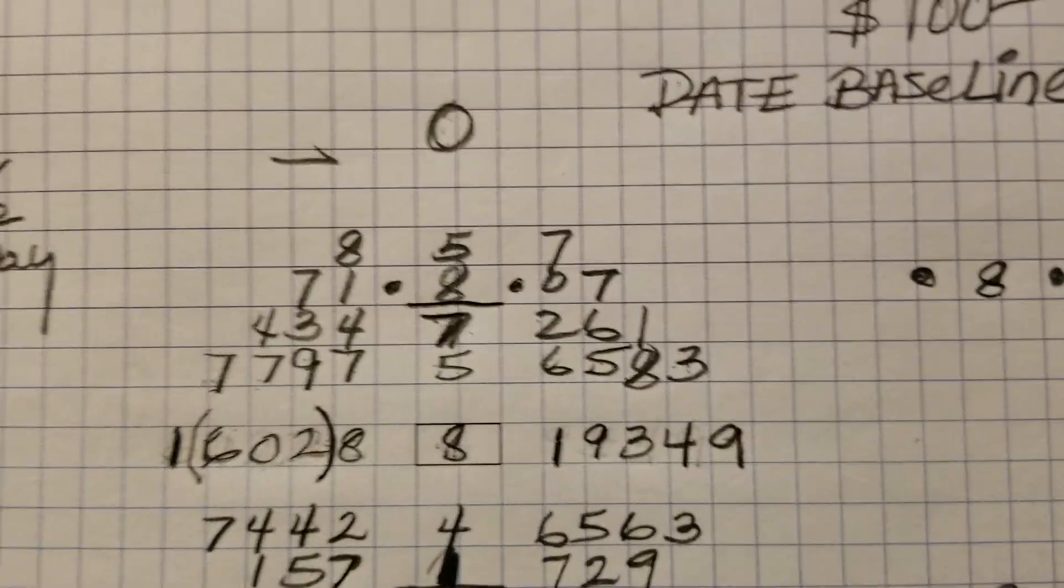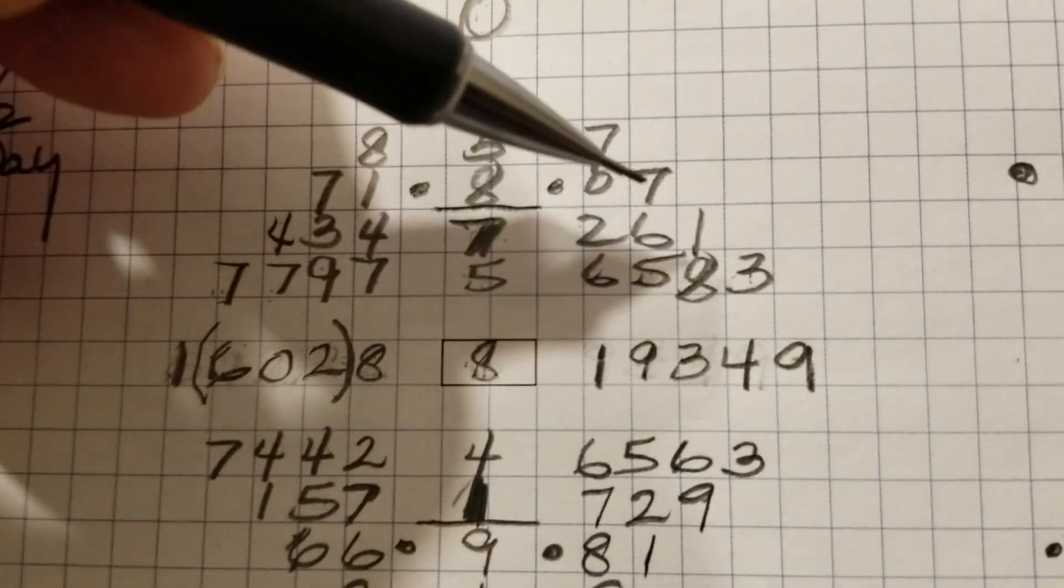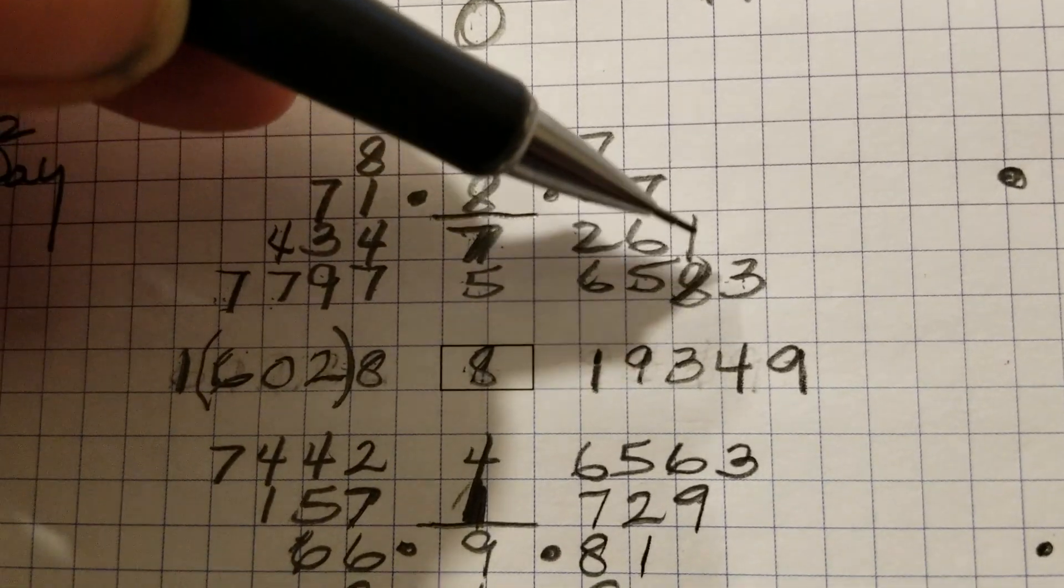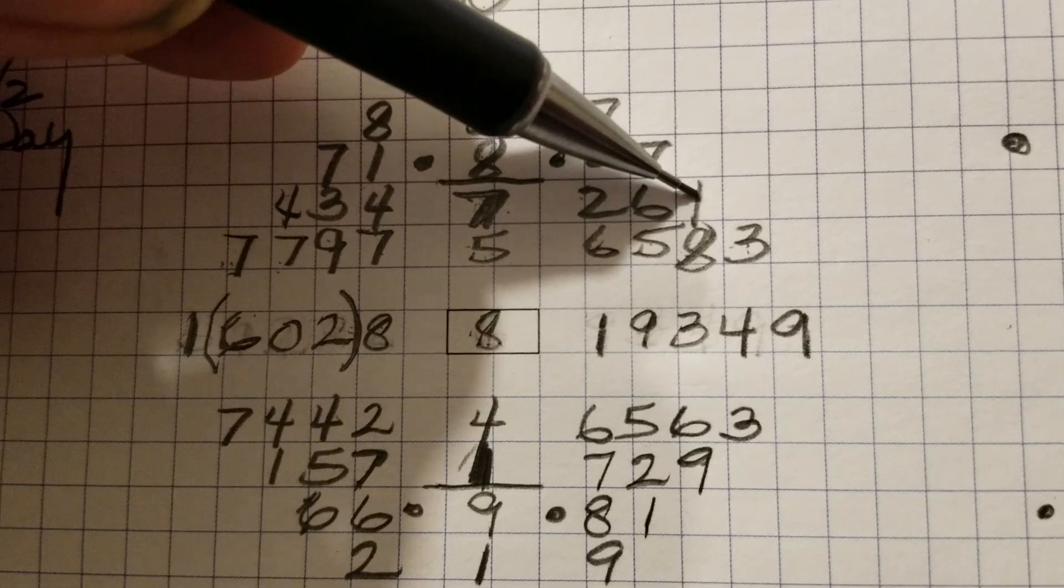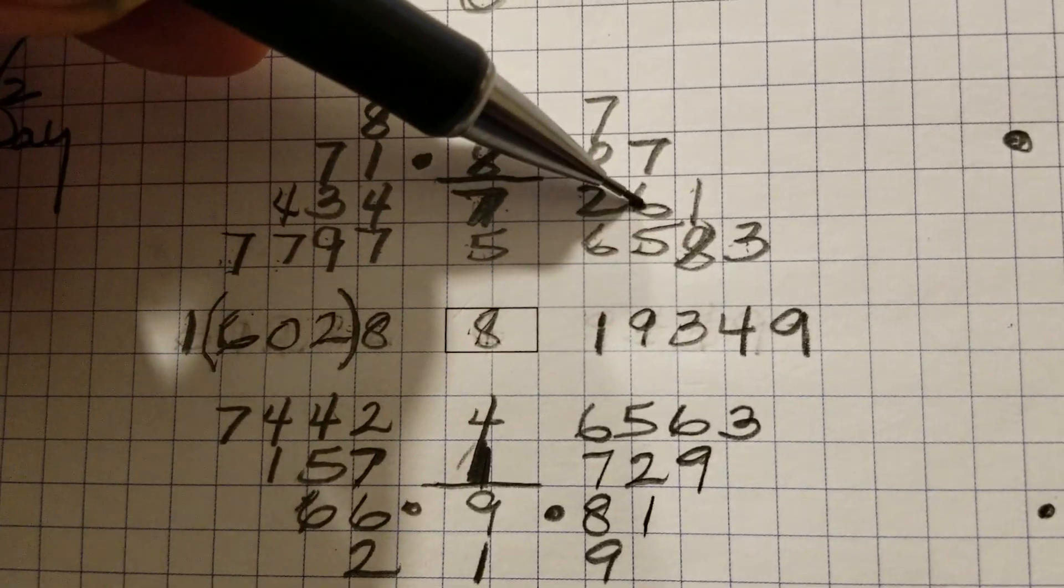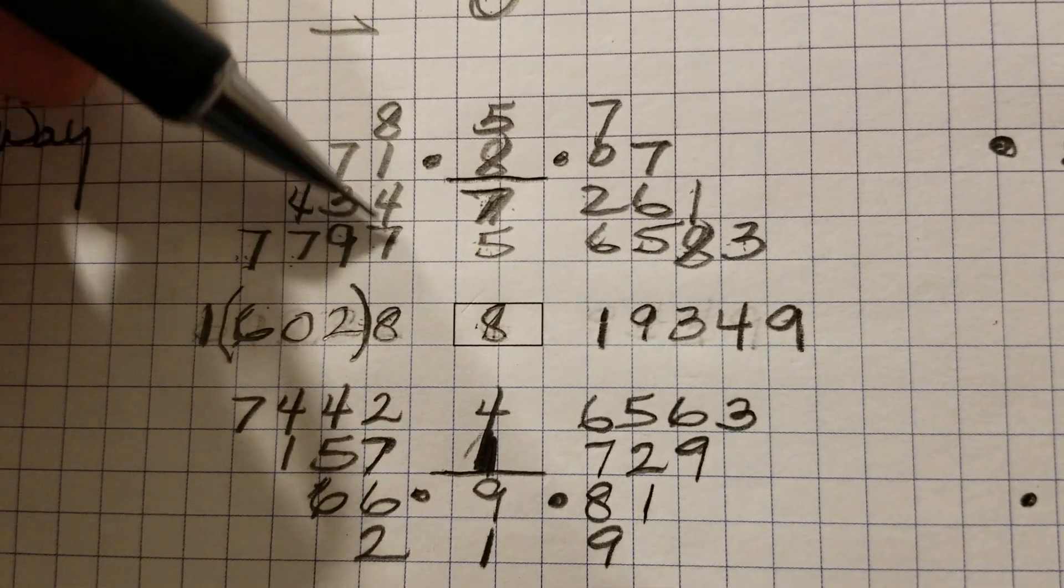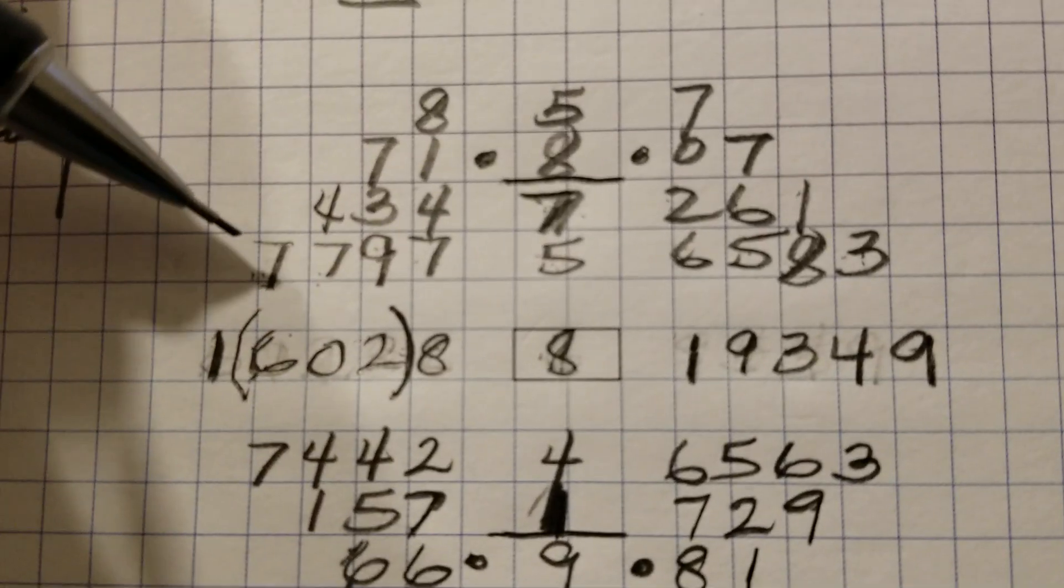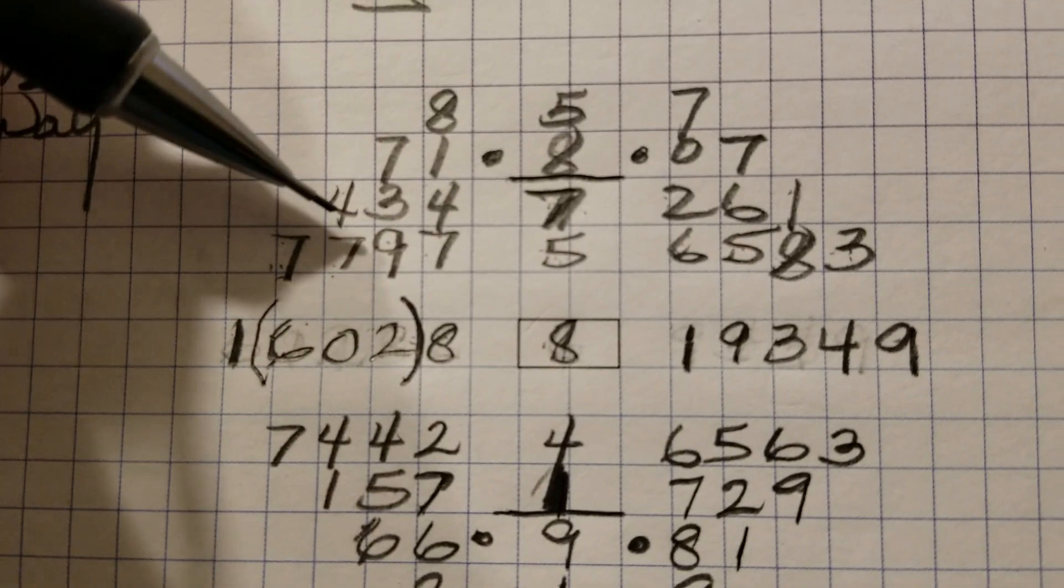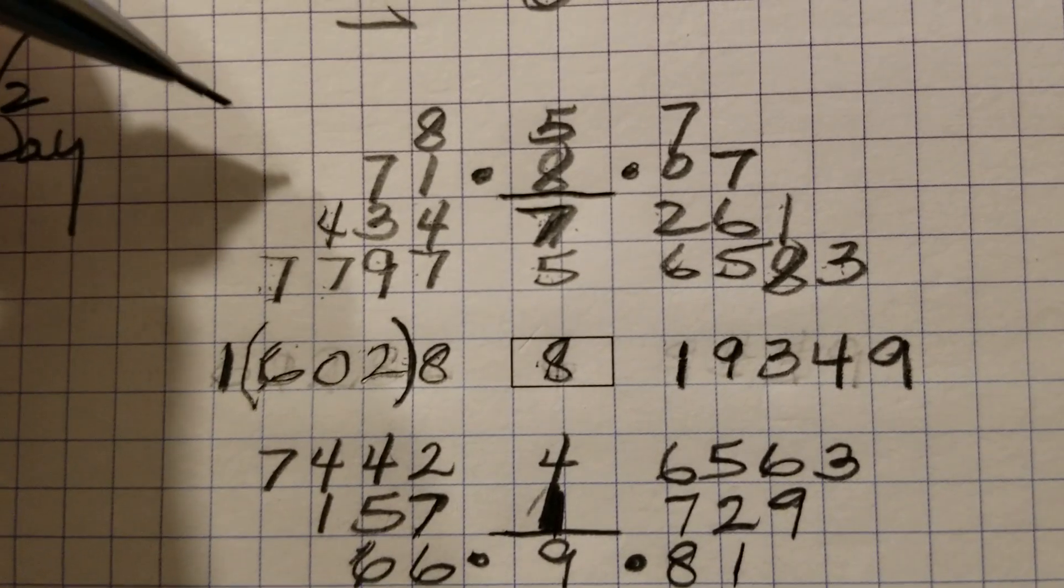And what we're doing is we are going back and forth. Okay. See, 3 plus 8 is 11. So we put the 1 there. 1 and 5 is 6. 6 and 6 is 12. Put the 2 there. And we just keep going back and stop right there. And then we go 7 plus 7 is 14. We put the 4 there. And that completes that row.